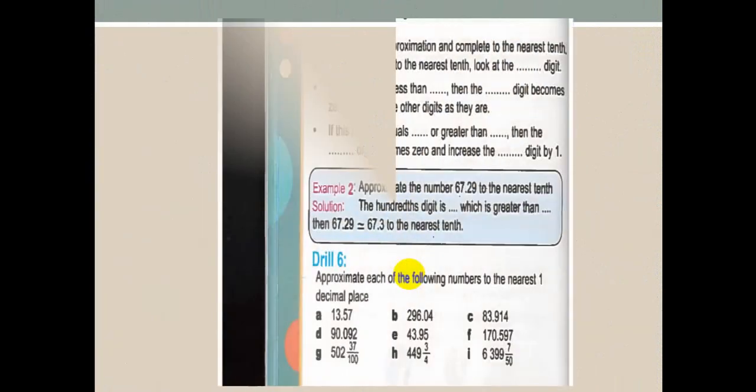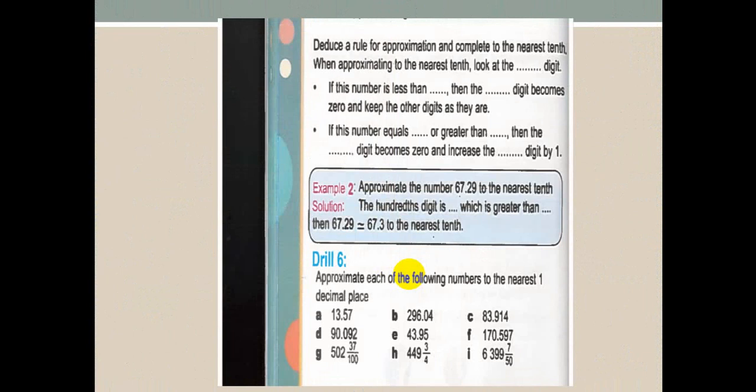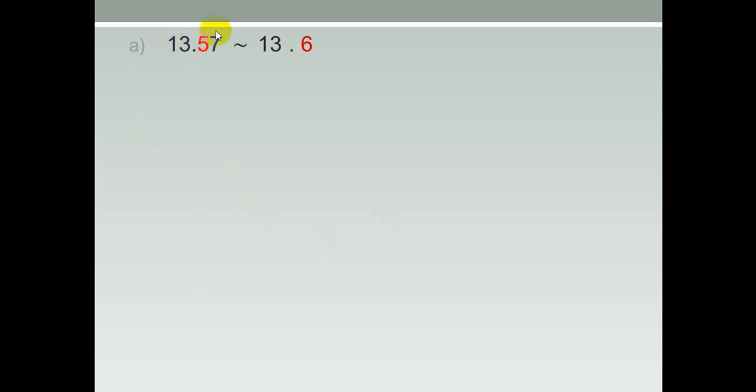Open your book at page 40, exercise number six. Number a: 13.57 — approximate it to the nearest tenths. Underline the tenths. Where is the tenths? The tenths is the first decimal place, the first number after the decimal point. The first number after the decimal point is five. Look to the next digit: seven. Seven is strong, so add one to five — it will be six.